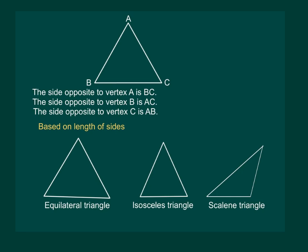Based on the length of the sides, a triangle can be equilateral triangle, isosceles triangle or a scalene triangle. For an equilateral triangle, all sides are equal. If length of one of the sides is 5 cm, then the other two sides are also 5 cm each.